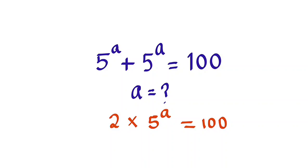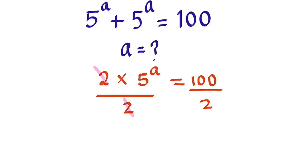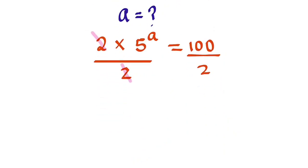Now from here, the next thing I'm going to do is divide through by 2. We cancel the 2 on the left side, so we're going to have 5 to the power of a equals 100 divided by 2, which gives us 50. So 5 to the power of a equals 50.